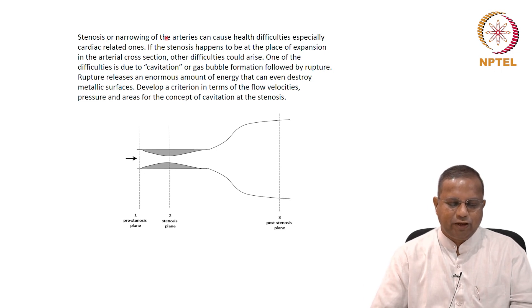Stenosis or narrowing of the arteries can cause health difficulties, especially cardiac related ones. If the stenosis happens to be at the place of expansion in the arterial cross section, other difficulties could arise. One of the difficulties is due to cavitation or gas bubble formation followed by rupture. Cavitation is a very interesting phenomenon, you might want to read about that separately.